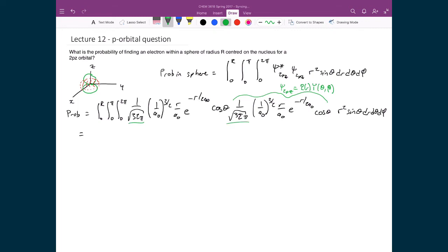I also have a₀^(3/2) and a₀^(3/2), and an a₀ here and an a₀ here on the bottom. So all of that can come out front, and I end up with 1 over 32π a₀⁵.